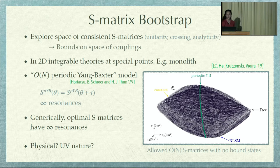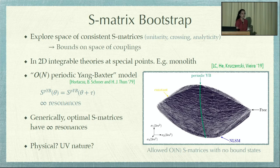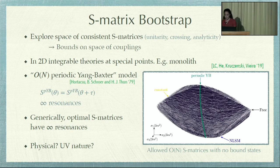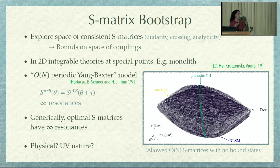The S-matrix of the periodic Zam-Baxter model was written down a long time ago, but it has some funny properties. It is periodic in the real rapidity, meaning the S-matrix looks the same at different energies, which sounds strange. There are also infinite resonances in this theory, and there is no known Lagrangian. However, you see it popping up at a special point in the monolith. Generically, also for non-integrable theories, S-matrices living at the boundary of the allowed region also have infinite resonances — it seems to be a generic feature of these optimal solutions. We would like to understand if these are physical theories, and in particular what is the UV nature of the models with such S-matrices.